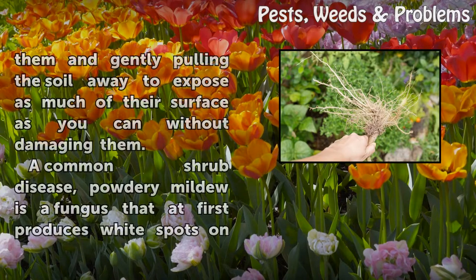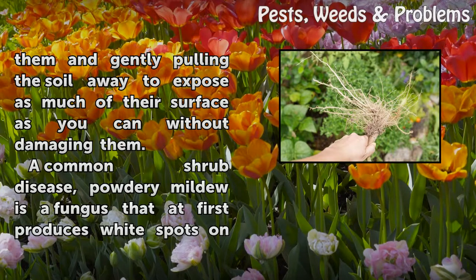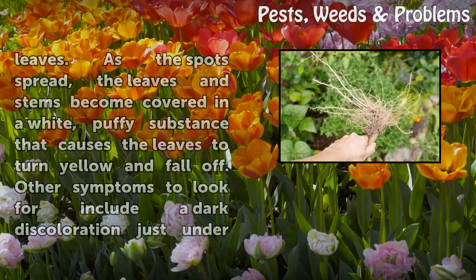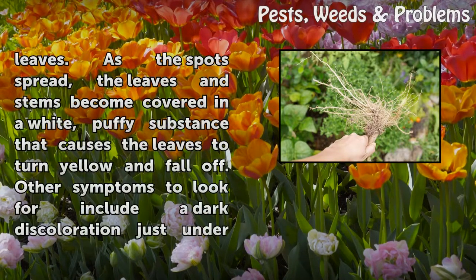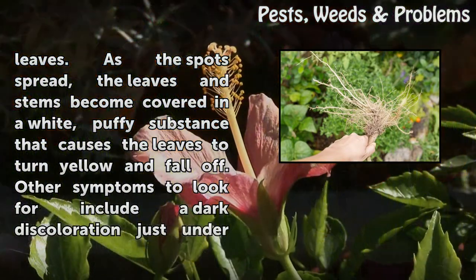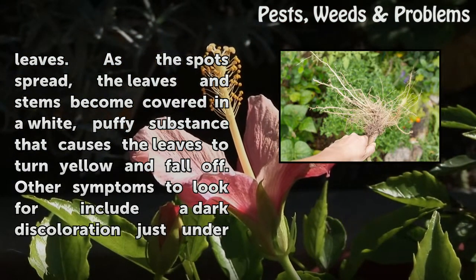Inspect roots by digging around them and gently pulling the soil away to expose as much of their surface as you can without damaging them. A common shrub disease, powdery mildew is a fungus that at first produces white spots on leaves. As the spots spread, the leaves and stems become covered in a white, puffy substance that causes the leaves to turn yellow and fall off.